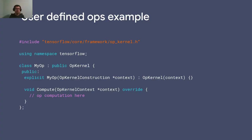Here I have an example of defining a custom op where it's implemented as a class called MyOp that inherits from the class OpKernel. I have to do two operations: one is to call the constructor and make sure I also call the OpKernel constructor. The other is the compute method where the entire computation happens — reading the input tensors, operating on those tensors, putting values into the output tensor, and then returning.